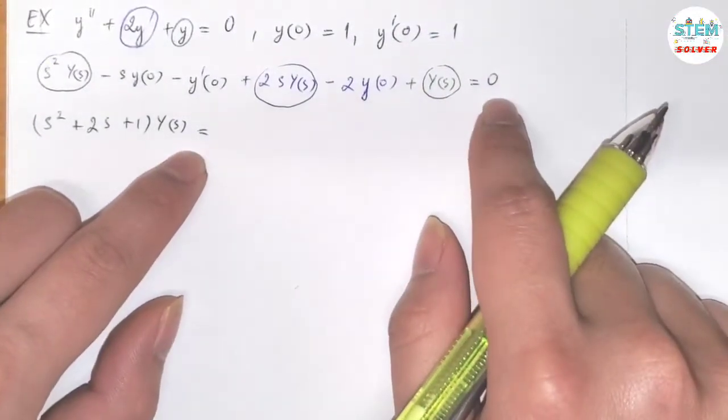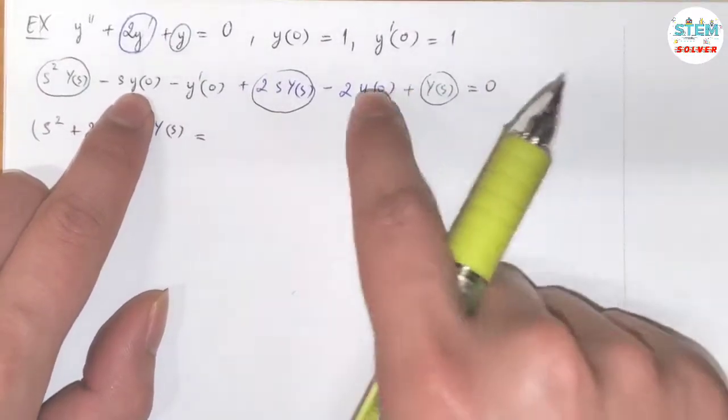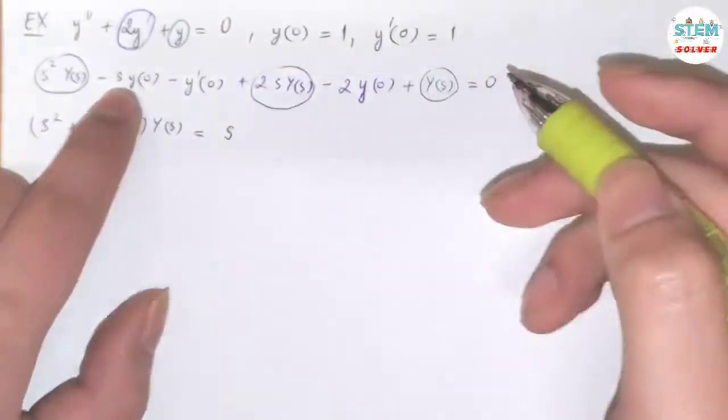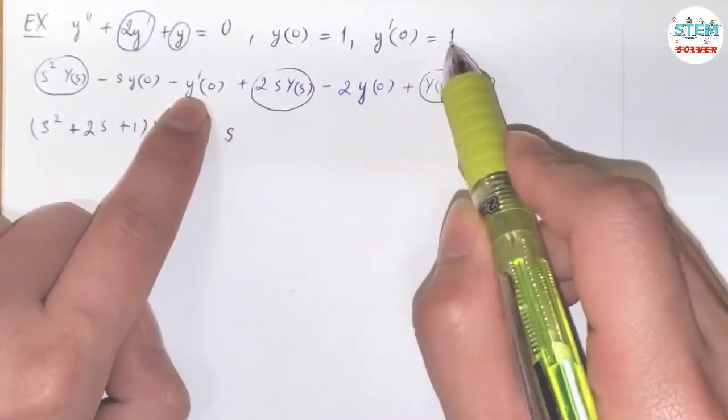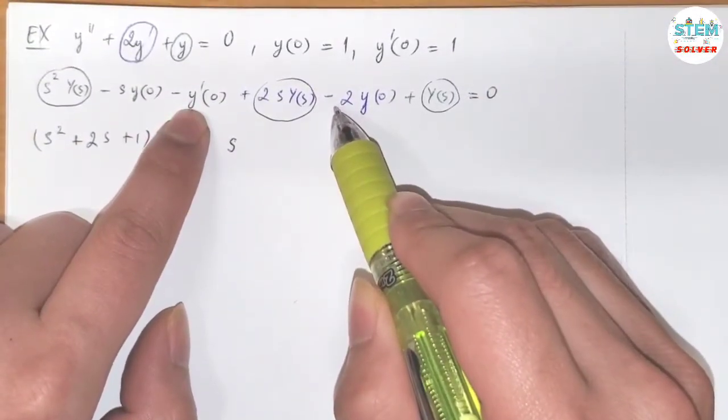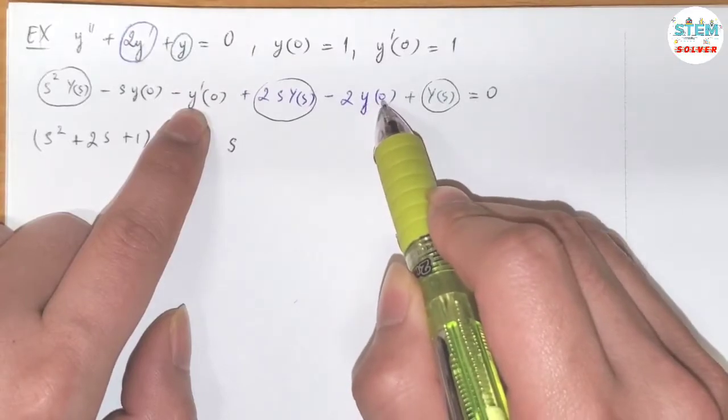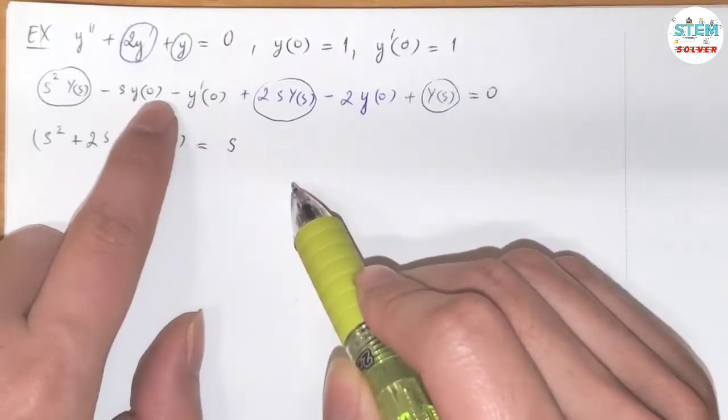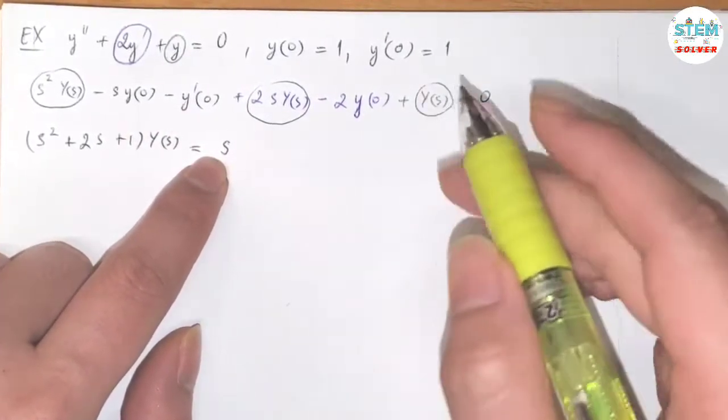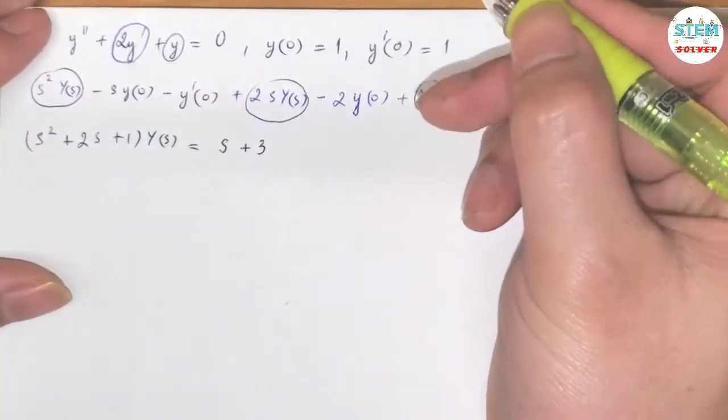Equals. So on the right side, we have 0. And for this one, y of 0 equals 1. So we have negative s. Negative y prime of 0 equals 1. So I have negative 1. And then y of 0 equals 1. So negative 2, which is negative 3. And move to the other side, which is positive 3. That's just algebra. You can do it yourself.